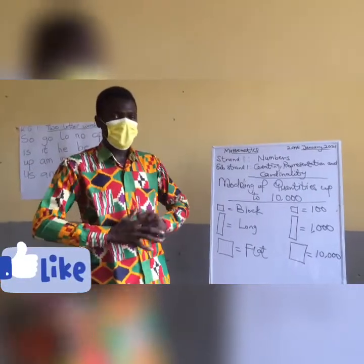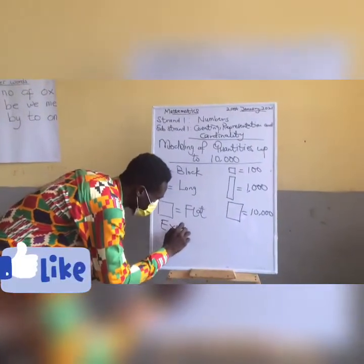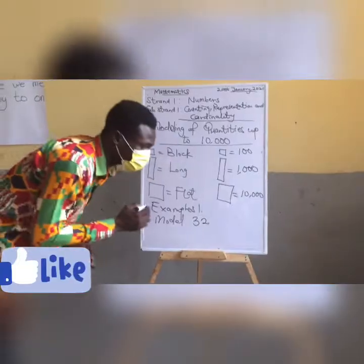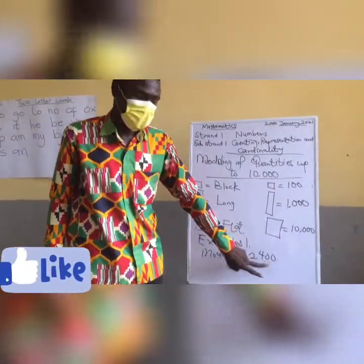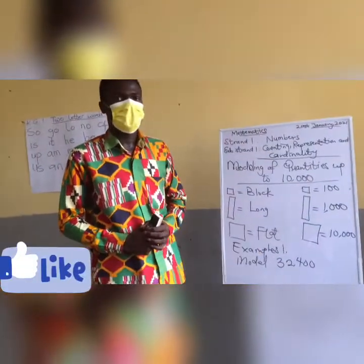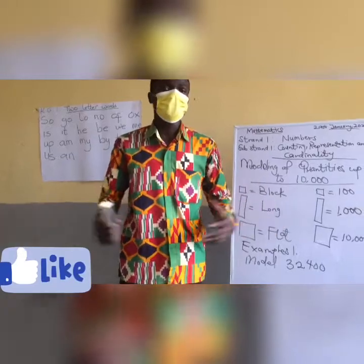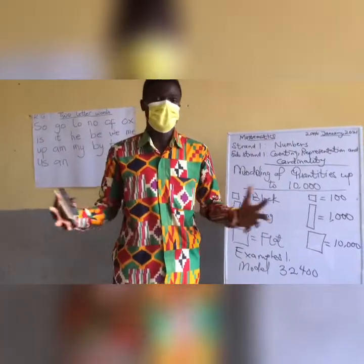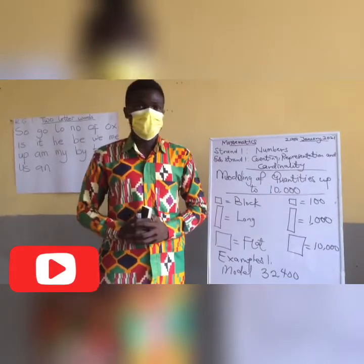Now let's look at how we can model any given quantity using these multi-base materials. Let's look at example 1. We have to model the number 32,400. The first thing we should do before we can model this quantity is to expand this number. Back in class 3 and 4, we were taught how to expand any given number. Do you know how to expand any number?